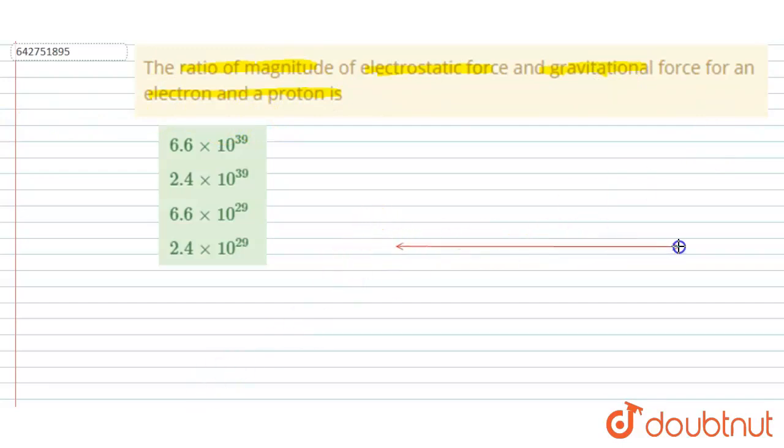This is the proton P and this is the electron E. Here the electrostatic force from Coulomb's law, we know that it will be equals to k q₁ q₂ by r square.